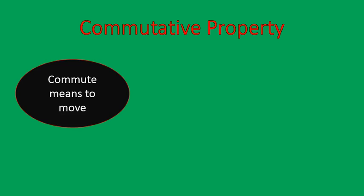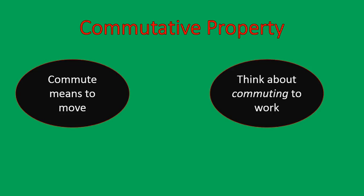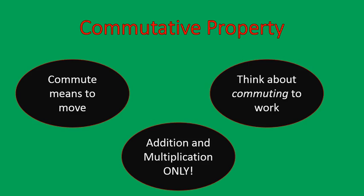Commutative property — we've talked about this one in a previous lesson where we talked about commuting meaning to move, like when you commute to work. Although it can only be used with addition and multiplication, today we're talking about multiplication properties, so we would call it the commutative property of multiplication.